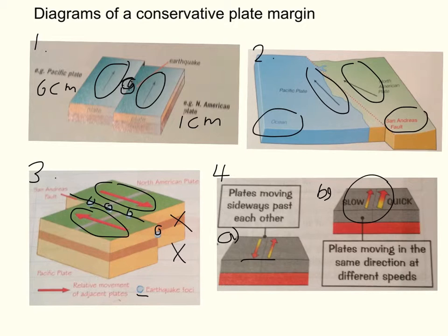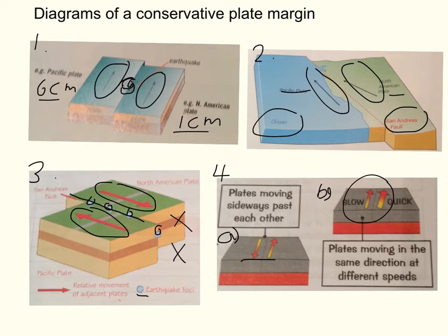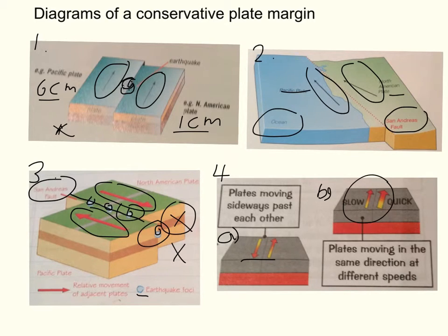Remember, you need to be able to draw one in an exam, fully labelled. Key things to include: make sure you have the arrows, ideally going in the same direction with the speeds represented. Name an example — the Pacific plate and the North American plate. Name what the fault line is called — the San Andreas Fault. Mark on the earthquake foci as little dots or as a cross. And to represent the shockwaves, draw dashed circles around each foci. Make sure you label that as vibrations or earthquakes.